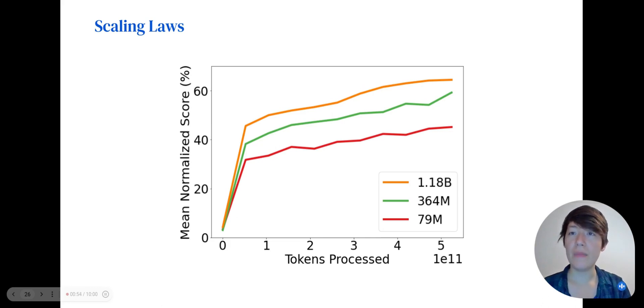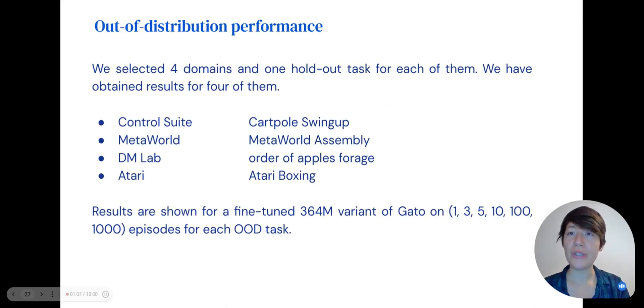We analyzed the benefit of scaling the number of parameters and the amount of data by plotting the number of tokens processed against the mean normalized score. So the x-axis in the previous slide is now the y-axis. We trained 79 million, 364 million, and 1.18 billion parameter variants of Gato, and observed that the biggest model had the best performance for the same number of tokens seen in training.